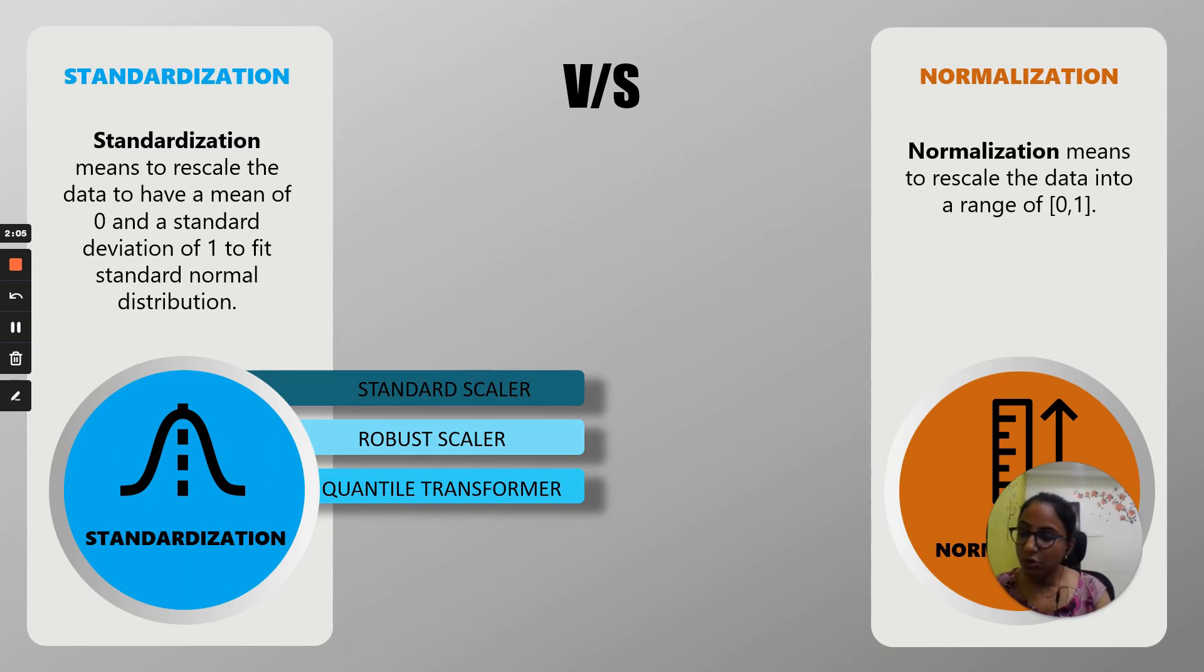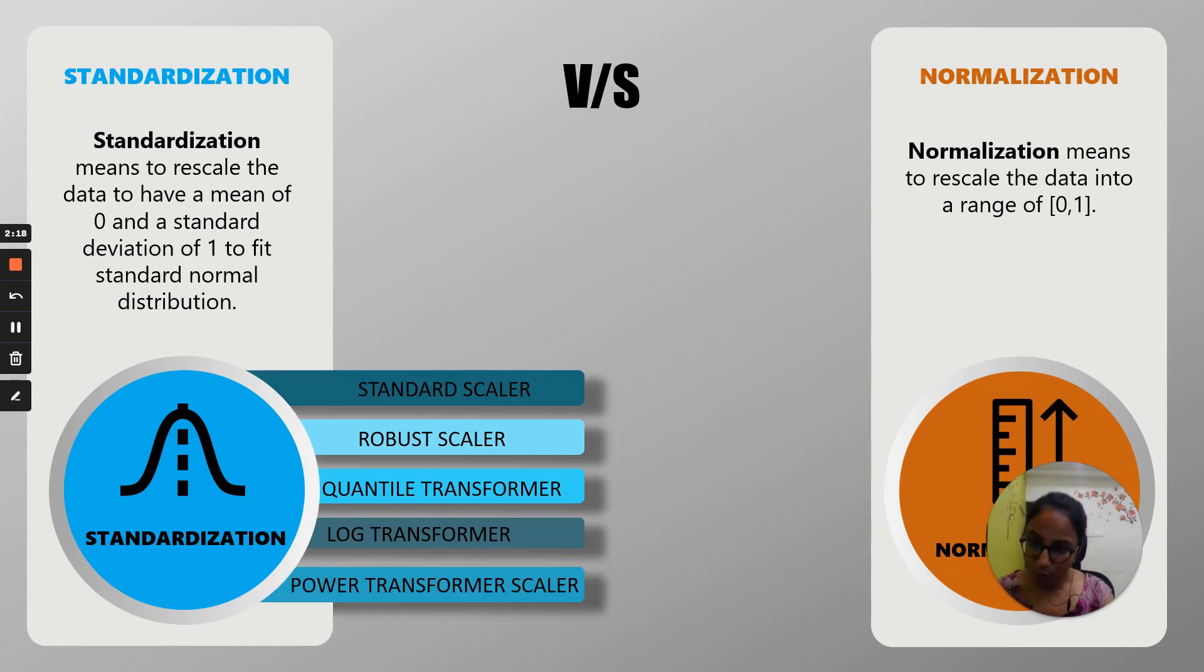Then it's log transformer. It makes your skewed distribution to normal distribution. That's where you use log transformer. Then power transformer scaler. It makes normal, means it also gets your data into normal shape. That's what standardization is, but your power transformers are of different types.